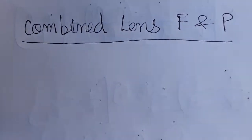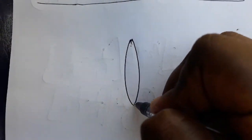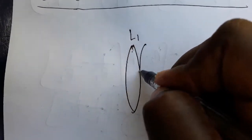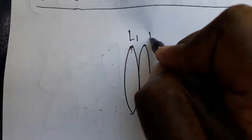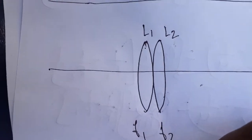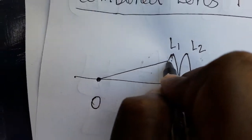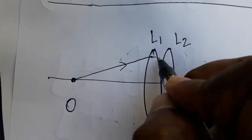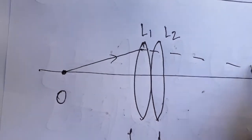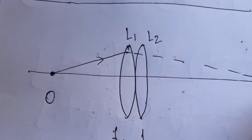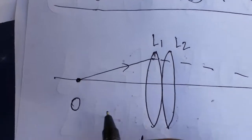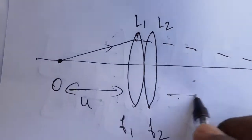Today we are going to see combined lens focal length and power — the combination of two lenses. I am taking two lenses: one is a convex lens L1 and another is also a convex lens L2. This focal length is f1 and this focal length is f2. The object is placed here, and because of the first lens, the image is going to form here. I am taking this as i-dash, so the object distance is u and the image distance is v.